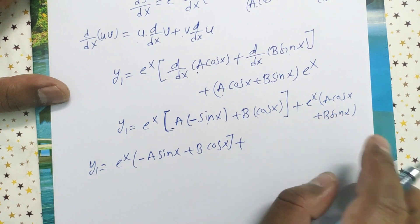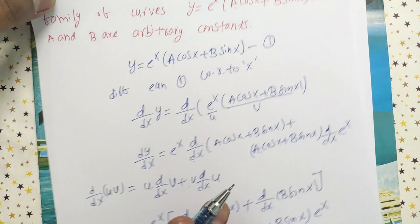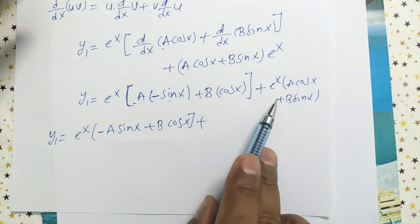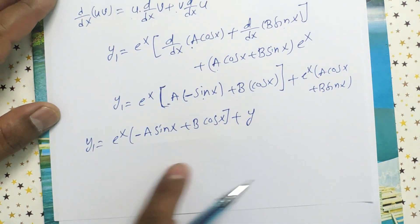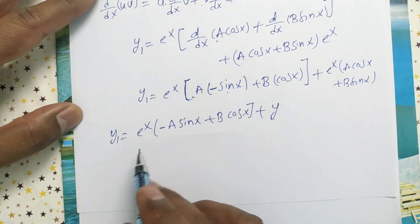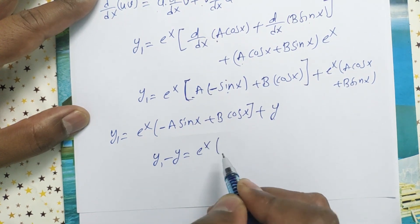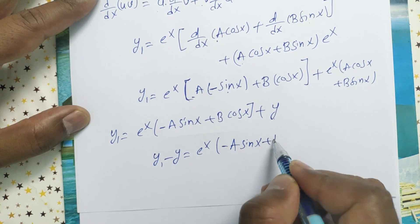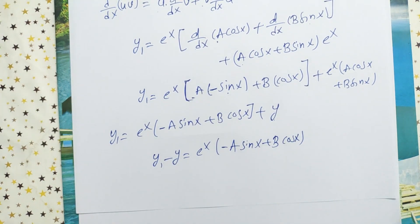In place of eˣ(a cos x + b sin x), we can substitute y. Bringing y to the left side gives y₁ - y = eˣ(-a sin x + b cos x). Take this as equation two. Now we have to differentiate equation two again.